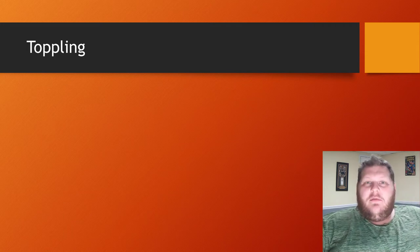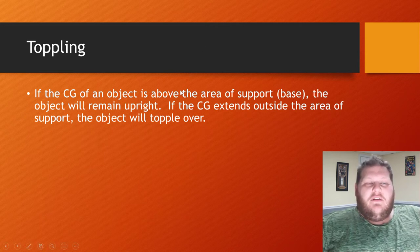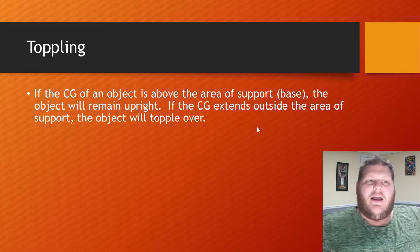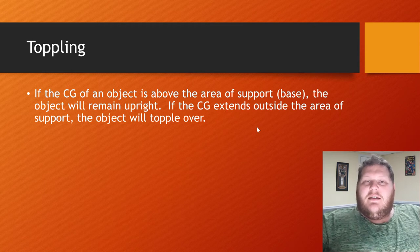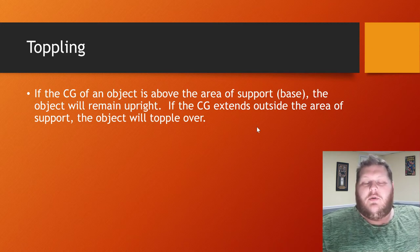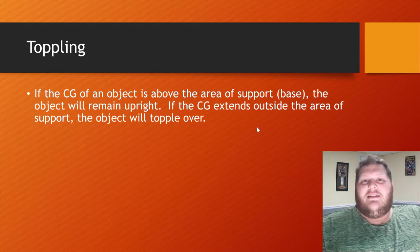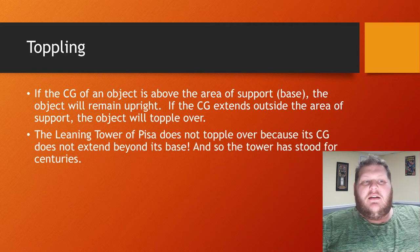On toppling: when the center of gravity is above the area of the base — the support — as long as that spot just below your belly button is still over your feet, your object is going to stay upright. As soon as that center of gravity moves out beyond the support base, it can no longer support itself and will topple over. The Leaning Tower of Pisa isn't toppling because that center of gravity doesn't extend beyond the base.